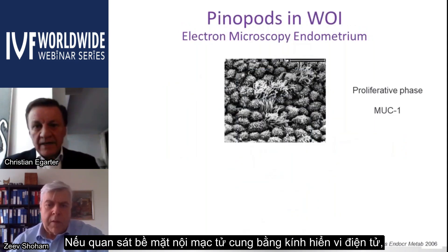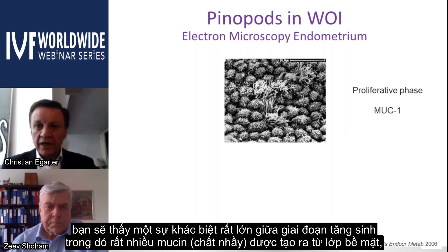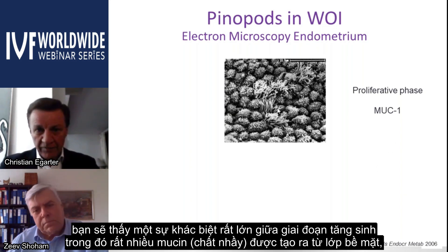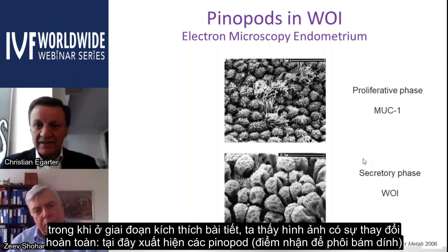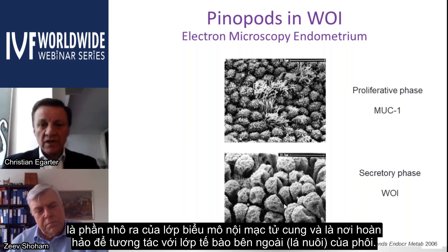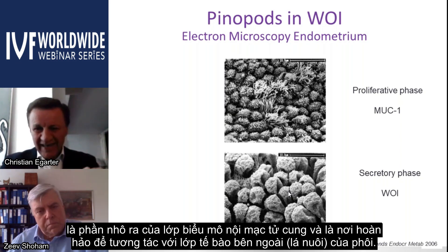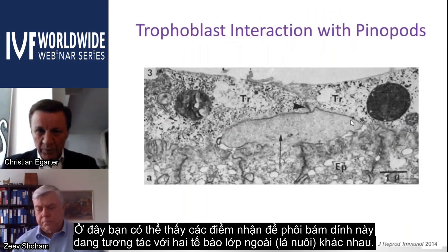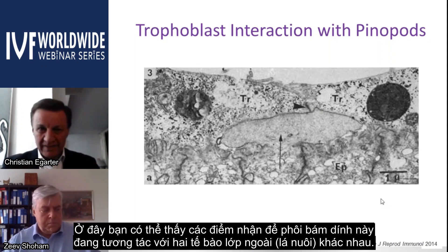When the endometrium surface is viewed by electron microscopy, there is a striking difference between phases. In the proliferative phase, much mucin is produced from the superficial layer. In the secretory phase, so-called pineopods appear — protrusions of the epithelial layer of the endometrium — which are the perfect place to interact with the trophoblast. One can observe a pineopod already interacting with two different trophoblast cells.